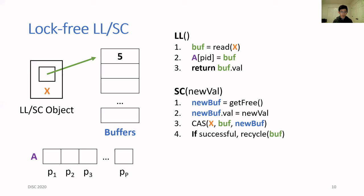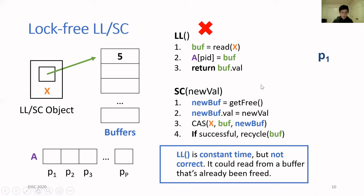This is why it's important to announce a buffer on line two of the LL operation. This algorithm has some nice properties. The LL takes constant time, and it's possible to implement the recycle operation so that the SC operation has constant time as well. You can also show that you only need M plus P squared buffers to implement M LL/SC objects, so it's space efficient.